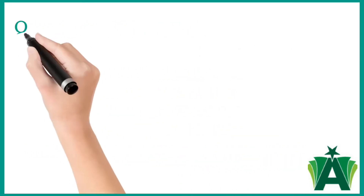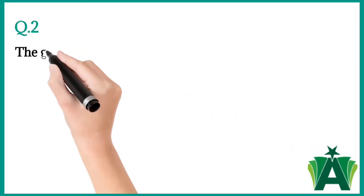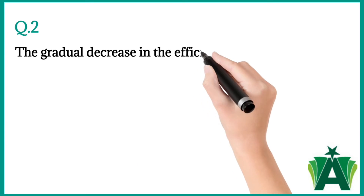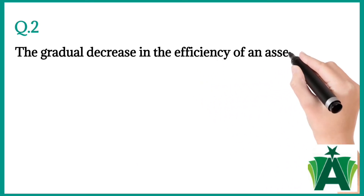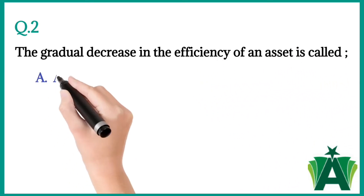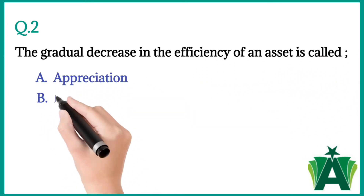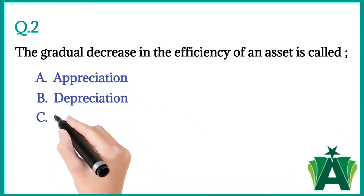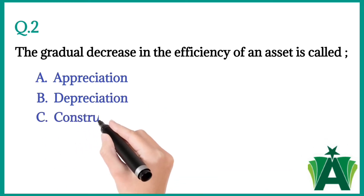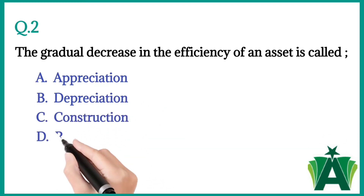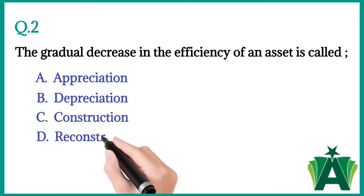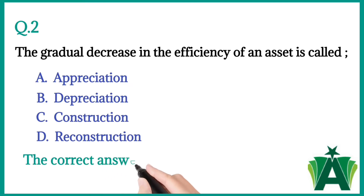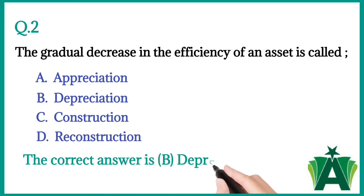Question number two: The gradual decrease in the efficiency of an asset is called a) appreciation, b) depreciation, c) construction, d) reconstruction. The correct answer is b) depreciation.